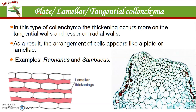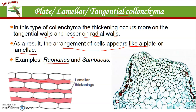Next is plate, lamellar, and tangential colenchyma. Here the thickenings are present on the tangential walls — more thickening on tangential walls and very little on radial walls. Due to this, the arrangement of cells appears like a plate or lamella, which is why it is called plate or lamellar colenchyma. Examples include Rhynchosia reticulatus and Sambucus.